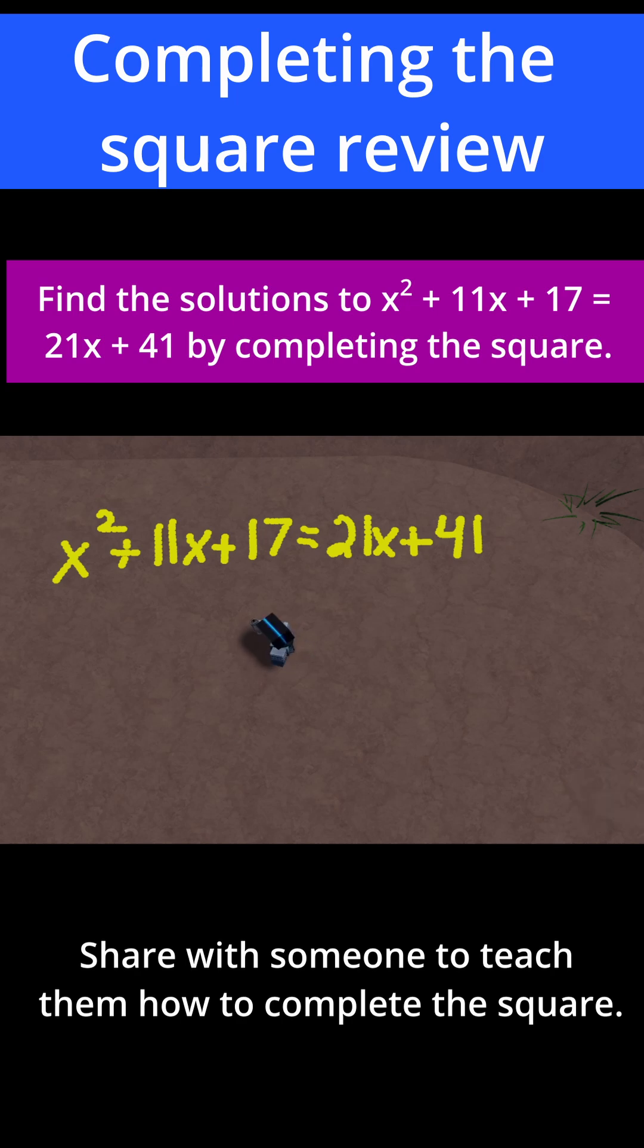To do that, I'll just do this in one step. Let's just subtract 21x from both sides, and let's subtract 17 from both sides. That way, I'll have the x terms on the left and the numbers on the right. So I'll have x squared, and 11 minus 21 is 10, so minus 10x, and that's equal to 41 minus 17, which is just 24.